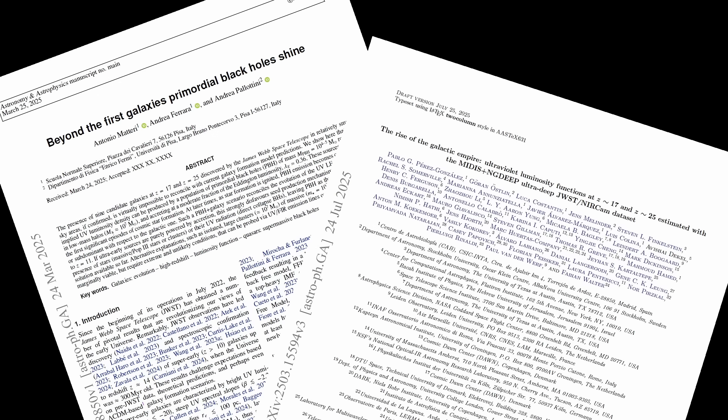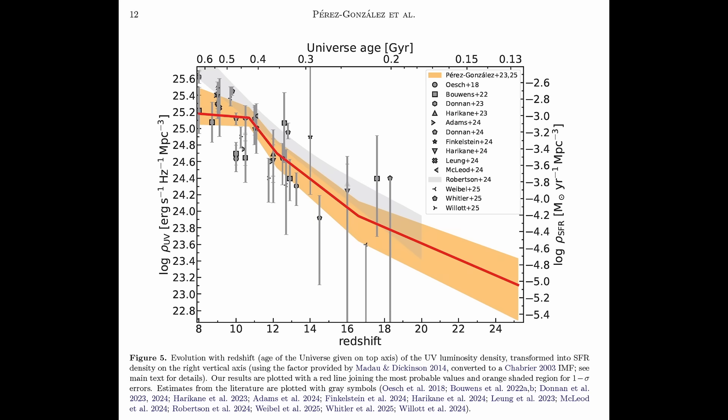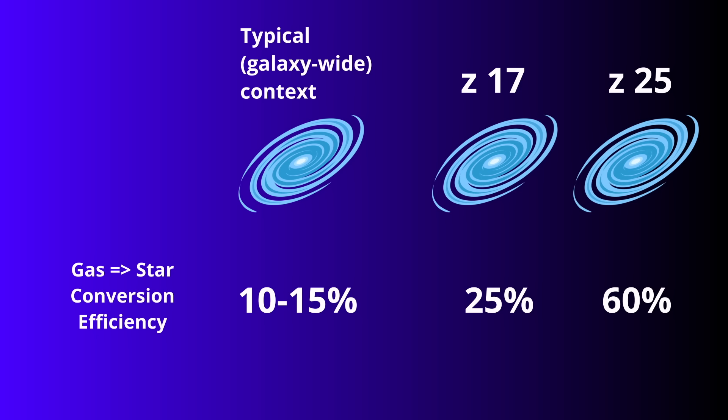The first study reports six candidates around a redshift of 17 and three more at 25. From those numbers, they calculate how the ultraviolet density evolves with redshift. In the Big Bang framework, it should fall away steeply. Instead, it declines much more slowly. To explain that, galaxies in the early universe would have to convert their gas into stars with impossible efficiency: 25% at redshift 17 and a staggering 60% at 25.